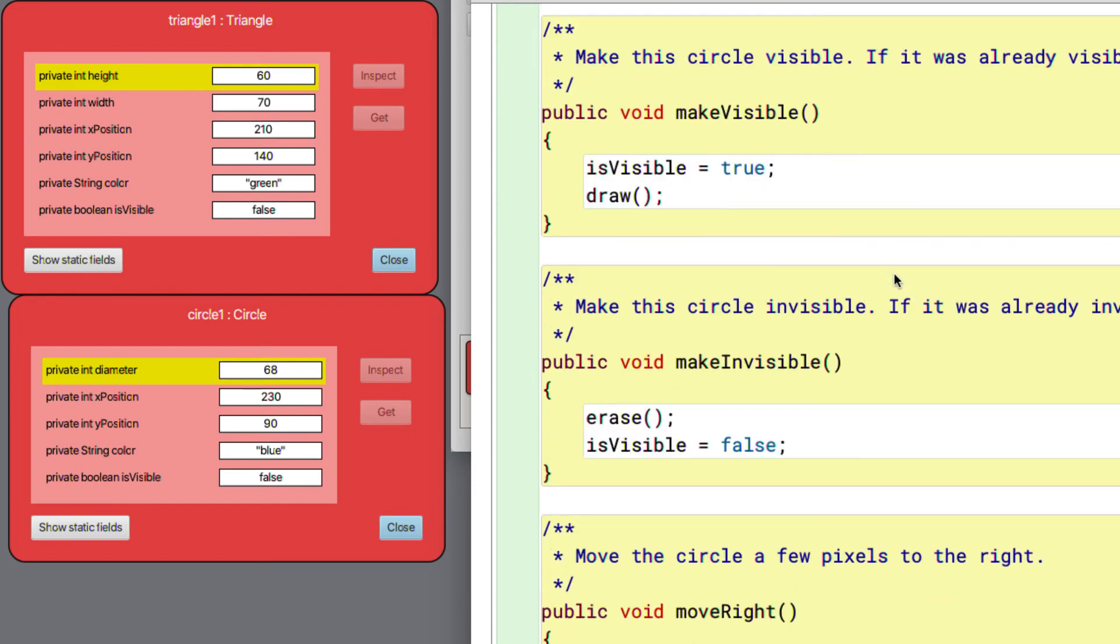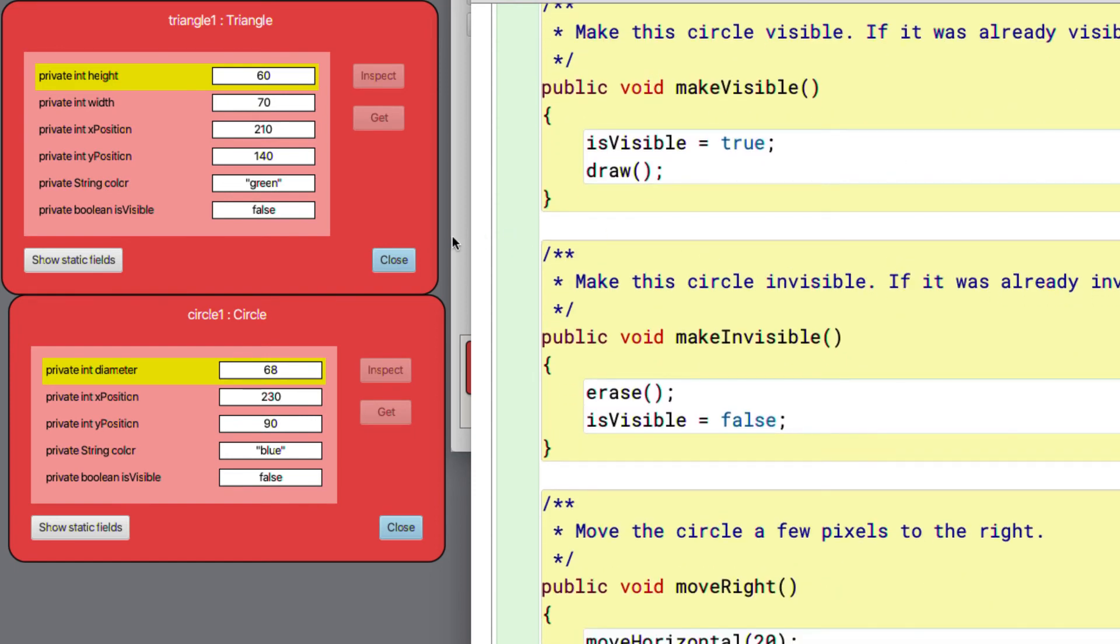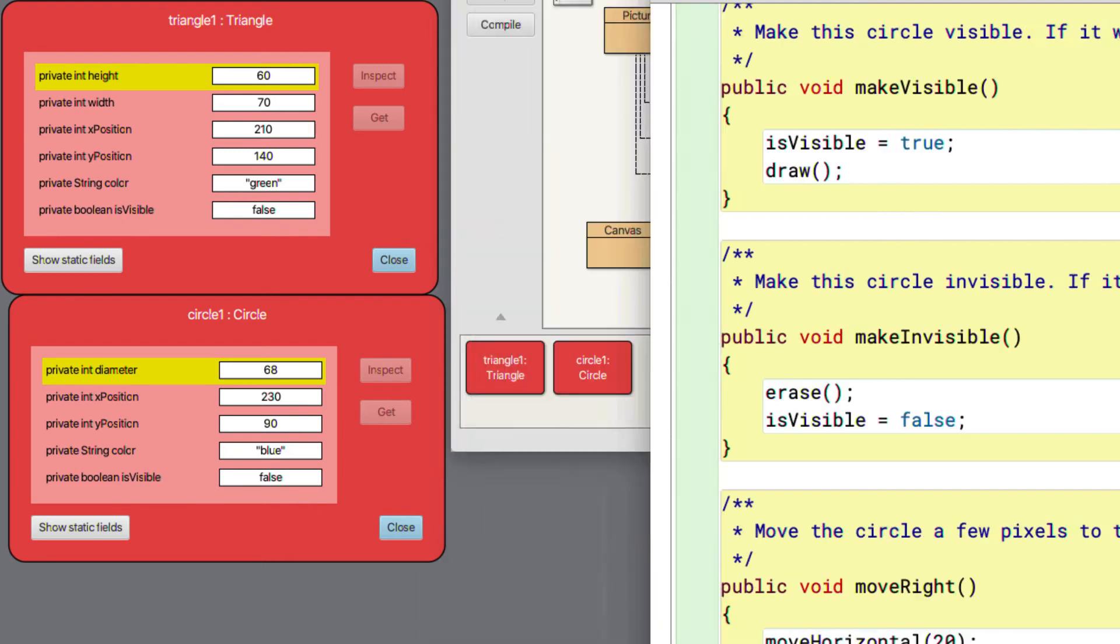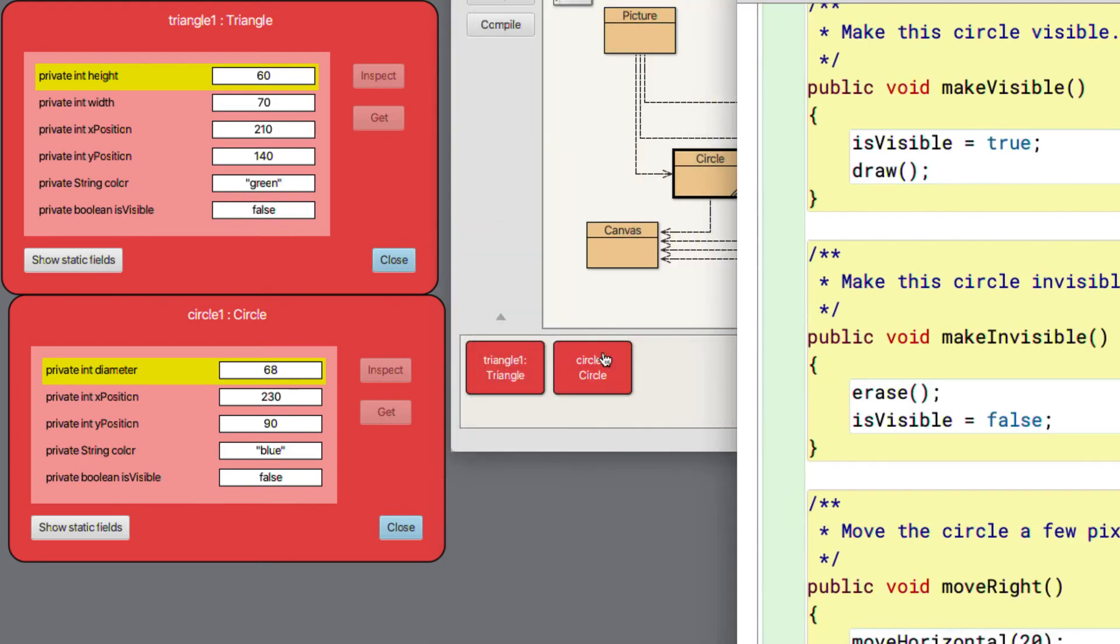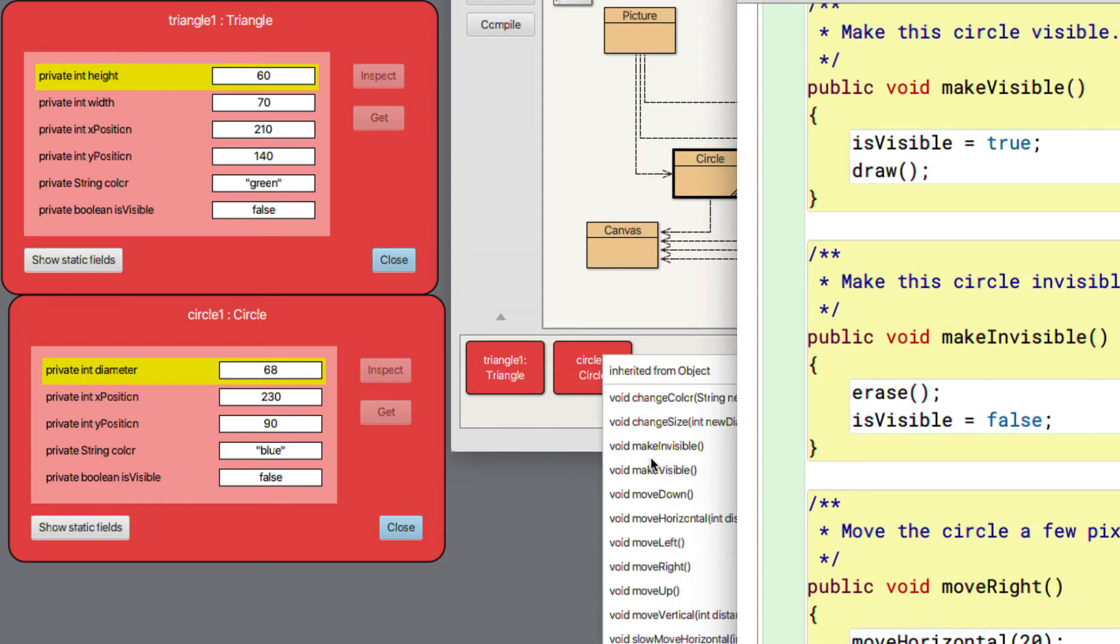And again, here are some methods, which is exactly what we have access to if we were to pop up the menu from the circle instance.